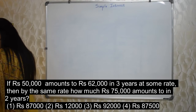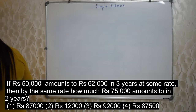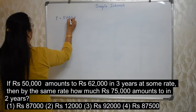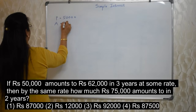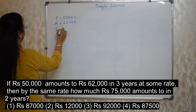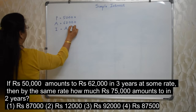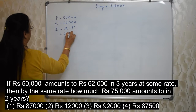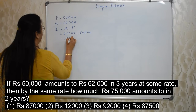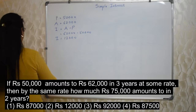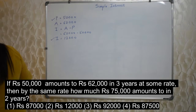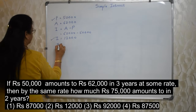What have they given in the first sentence? Rs. 50,000 amounts to Rs. 62,000. So P is Rs. 50,000, which has become Rs. 62,000. From this, what will we know? The interest. How to find interest from P and A? A minus P is interest. So A is Rs. 62,000 minus Rs. 50,000, that is Rs. 12,000. So 12,000 is the simple interest, or I. Now we have I, we have P, and they have given the period — N is equal to 3 years.